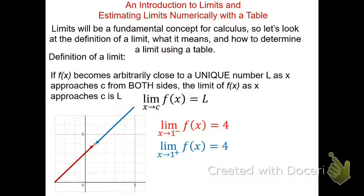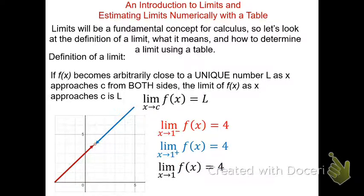This is part of the definition: as we approach c from both sides — from the left and from the right — the function must converge on a unique number. Here, both sides converge on 4, which is the unique number. The number has to be defined — it can't be infinity. Because both sides approach the same value, the limit exists, and we write: the limit of f as x approaches 1 is 4. Even if f isn't defined at that point, it doesn't matter — both sides just have to converge on the same unique number.